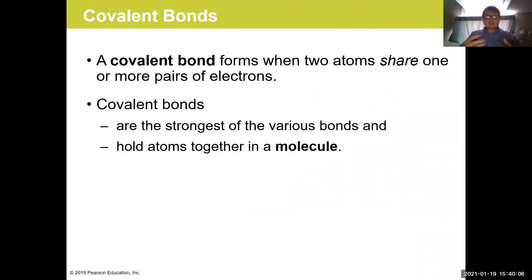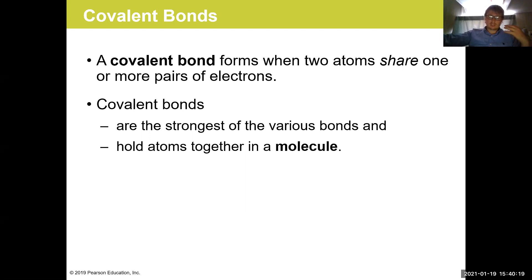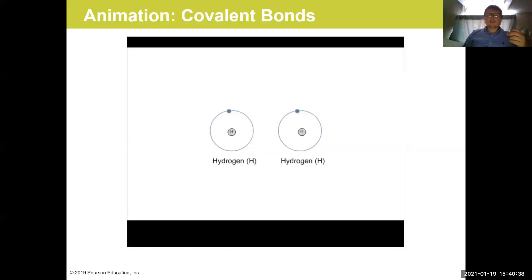The second type of bonding is a covalent bond, which forms when two atoms share one or more pairs of electrons. Covalent bonds are the strongest of the bonds we'll discuss. They hold atoms together in the form of a molecule — for example, water, H2, or O2 — and this video shows how that works.